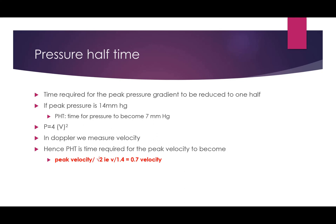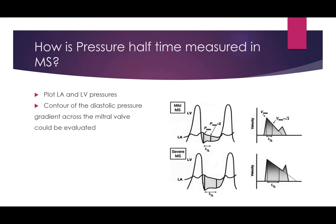We use velocity instead of pressure gradient because in Doppler we measure velocity, and the relationship between pressure and velocity as per Bernoulli's equation is P = 4V². Pressure halftime is clinically significant in mitral stenosis and aortic regurgitation.